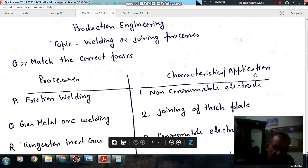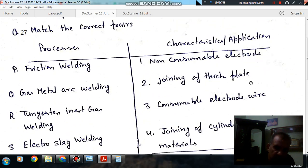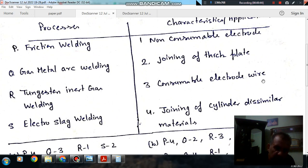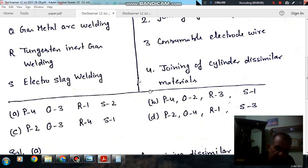Second column is characteristics or applications. One, non-consumable electrode, two, joining of thick plates, three, consumable electrode wire, and four, joining of cylinder dissimilar materials.